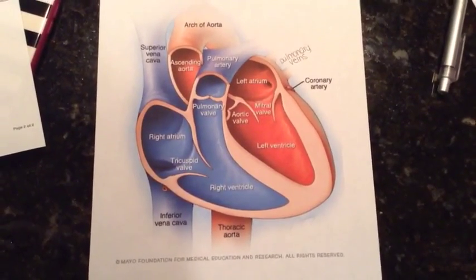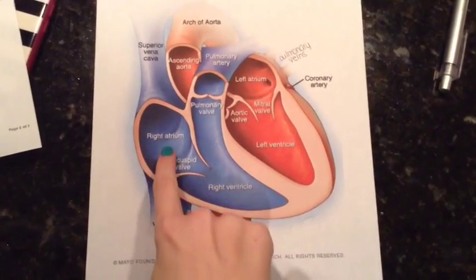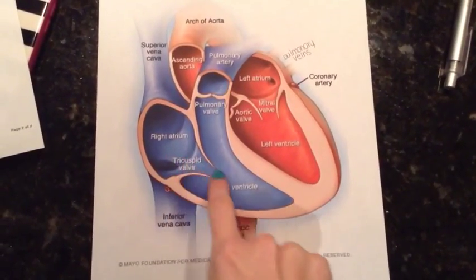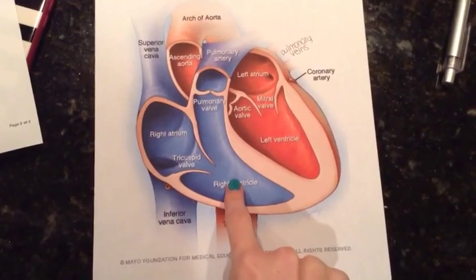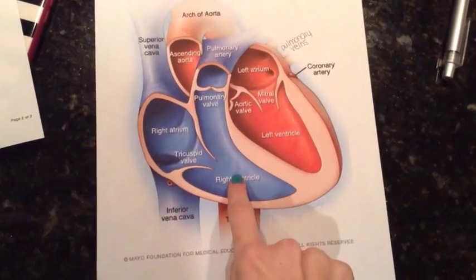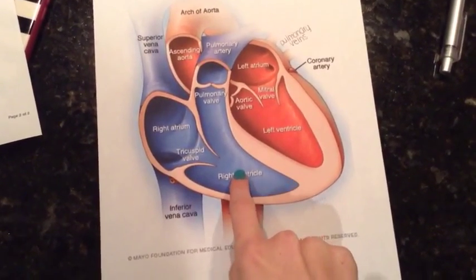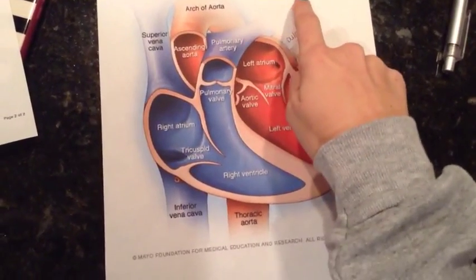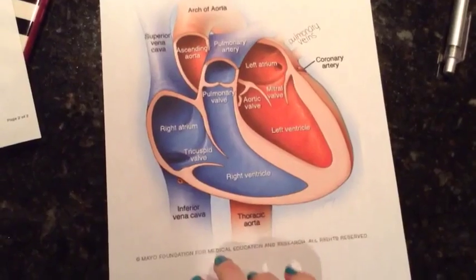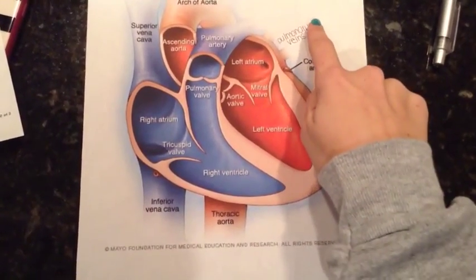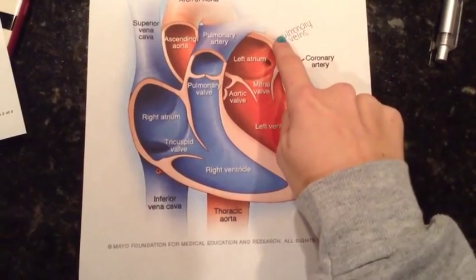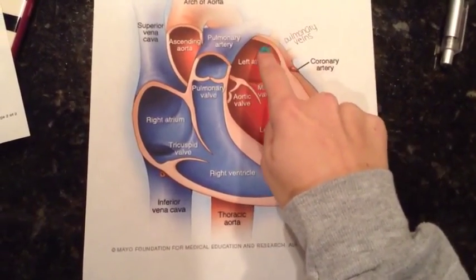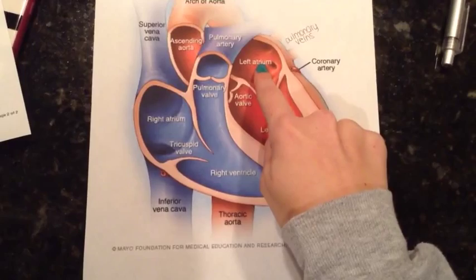Blood enters the right atrium and passes through the right ventricle. The right ventricle then pumps the blood to the lungs where it becomes oxygenated. The oxygenated blood is brought back to the heart by the pulmonary veins, which enter the left atrium.